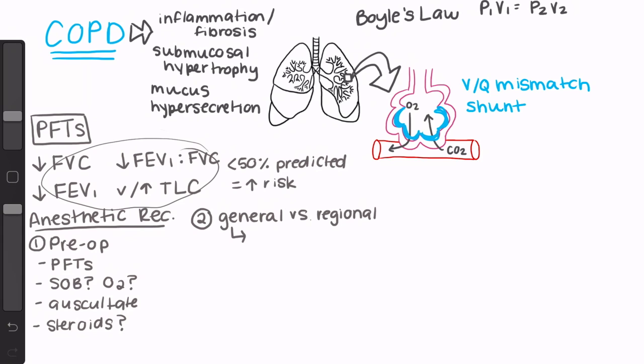If you end up choosing general anesthesia for your patient, you then have to decide if you're going to use an endotracheal tube or an LMA. An LMA may be a good choice for this patient population since they're less stimulating to the patient airway, but obviously there are a lot of situations in which LMA is not the safest choice. If you end up intubating your patient, you want to make sure that you're suppressing their airway reflexes in response to manipulation, whether it's using IV fentanyl or lidocaine with induction or adding in an LTA kit. Just remember that this isn't a population that tolerates being light in combination with airway manipulation, so we obviously don't want to cause excessive coughing or bronchospasm.